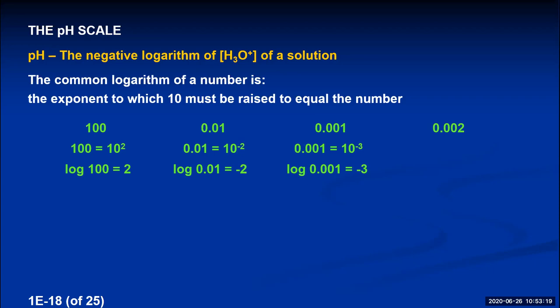Let's calculate the pH of orange juice with a hydronium concentration of 2.5 × 10⁻⁴ M. Taking the log of 2.5 × 10⁻⁴: log(2.5) ≈ 0.40 (two significant figures), and log(10⁻⁴) = −4 (exact). Adding them: 0.40 + (−4.000) = −3.60. Taking the negative gives pH = 3.60. Note: for logarithmic numbers, only the digits after the decimal point are significant figures — so 3.60 correctly has two significant figures.